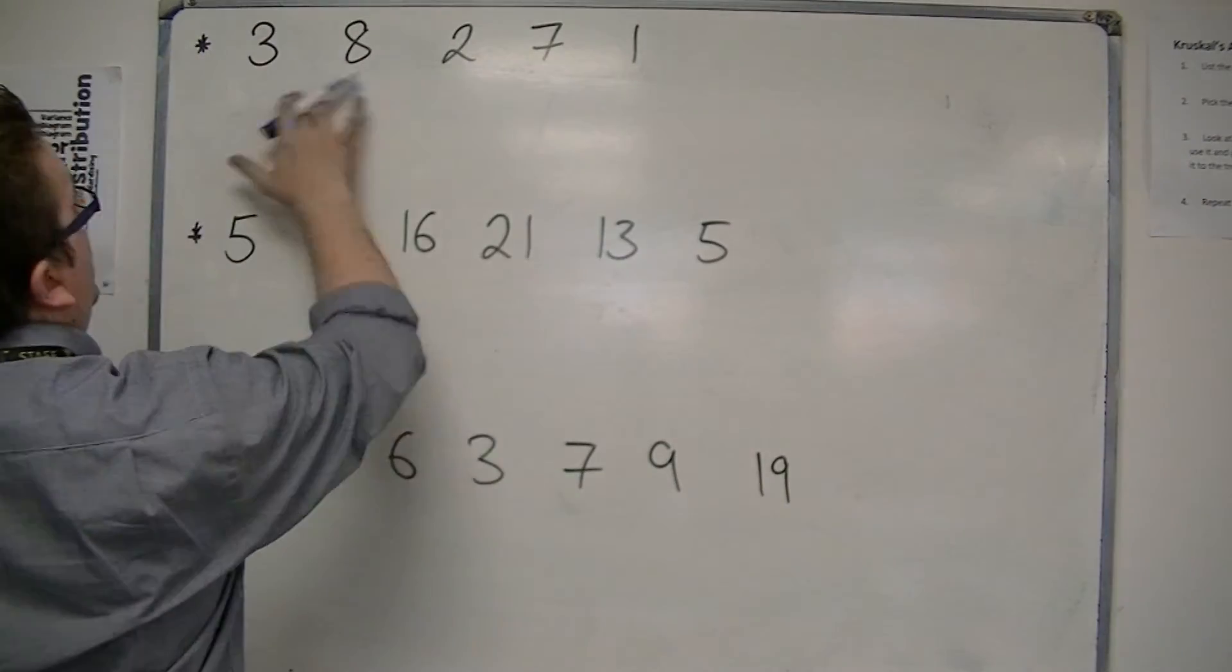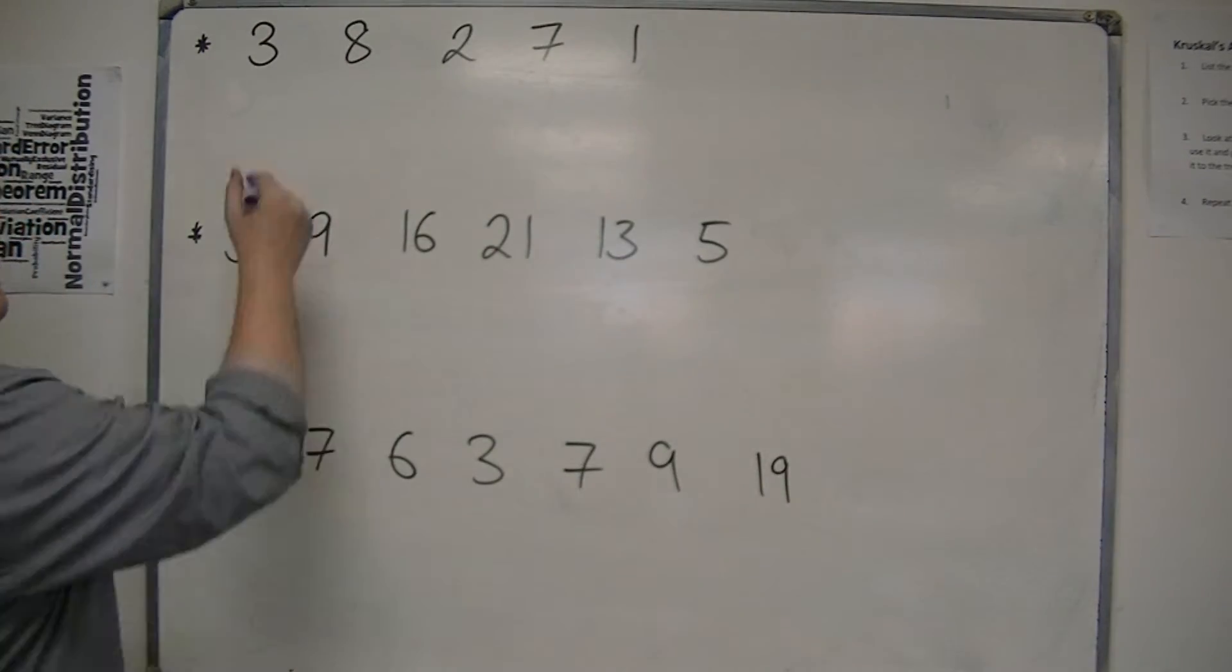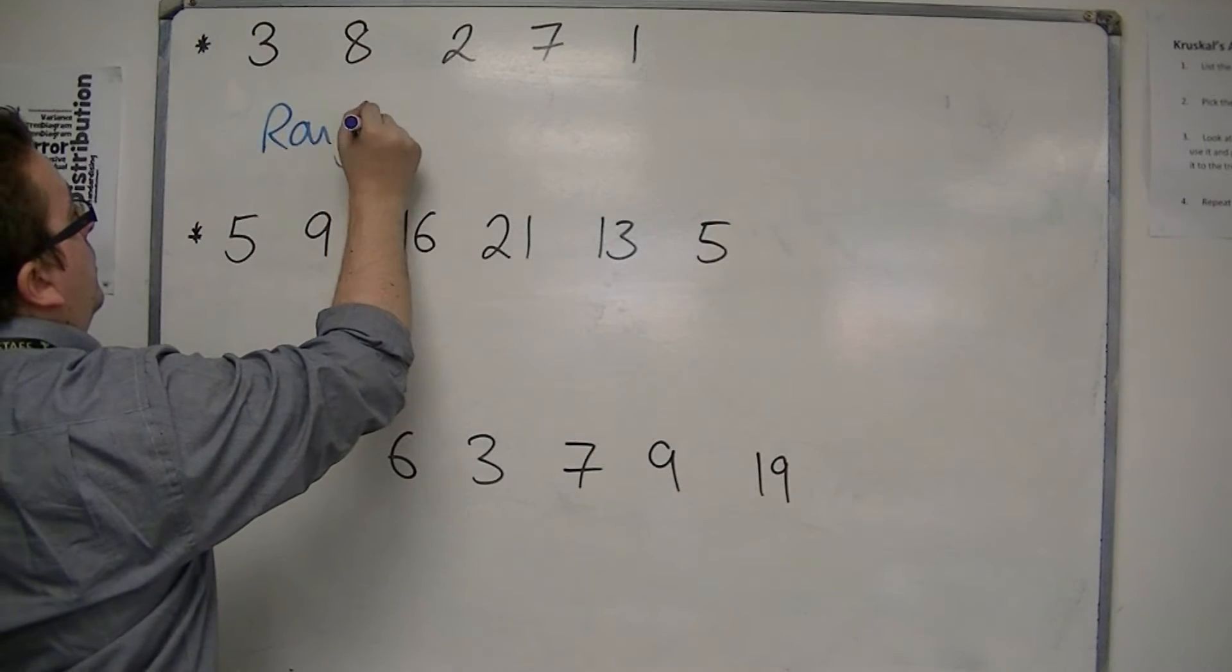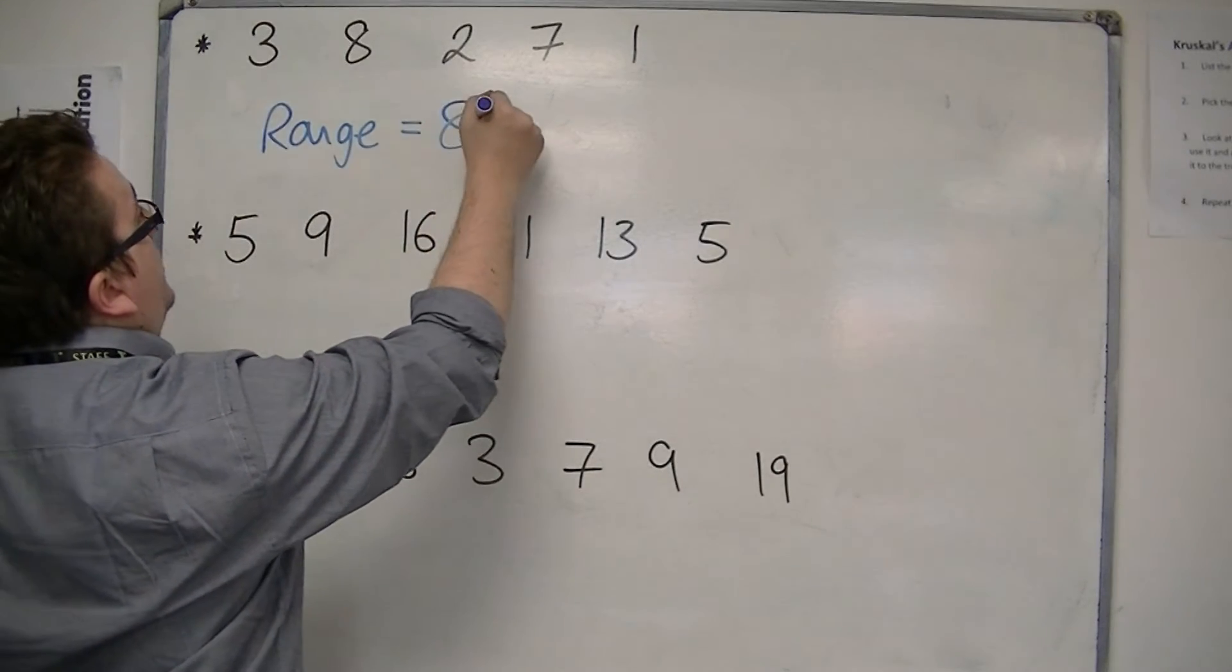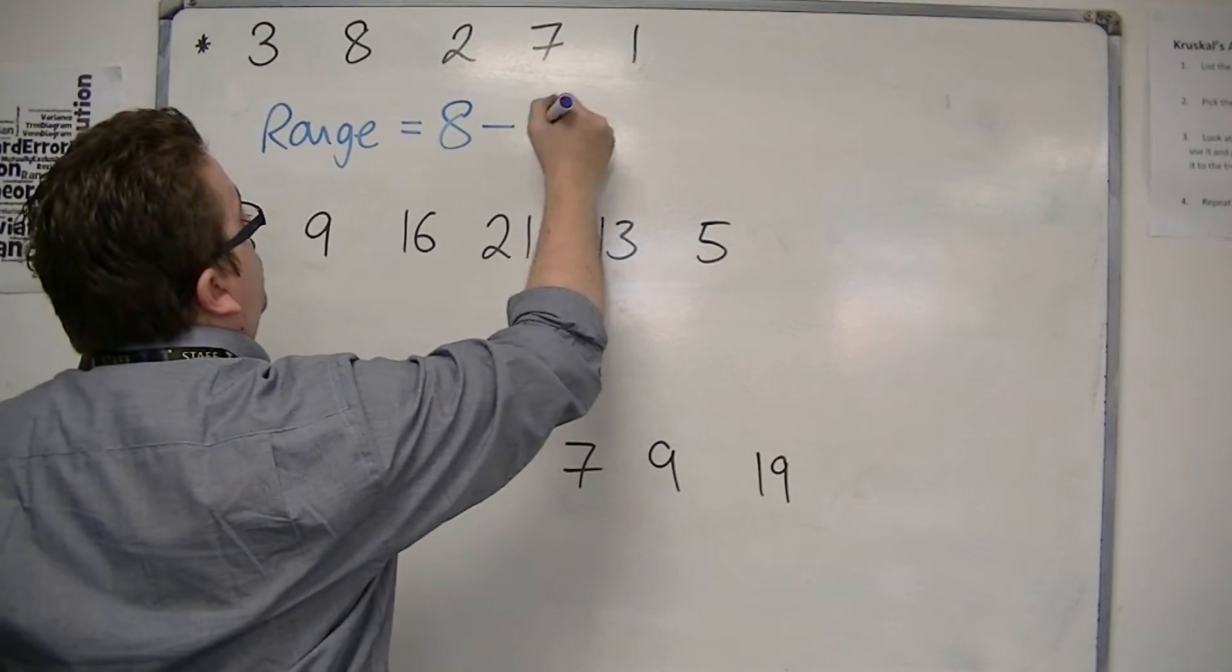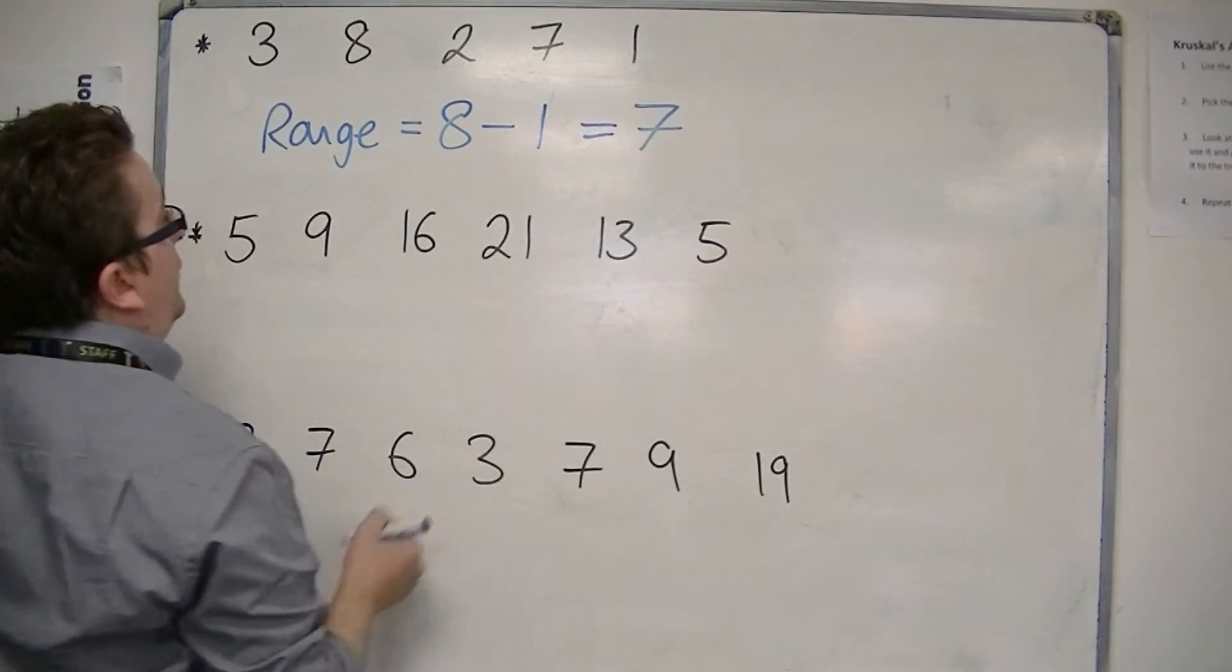So if we look at our first example, the range is the largest number, which is 8, subtract the smallest number, which is 1, so the range is 7.